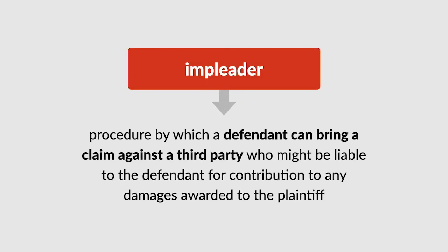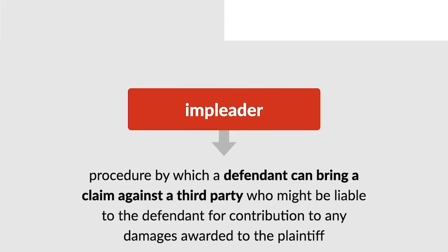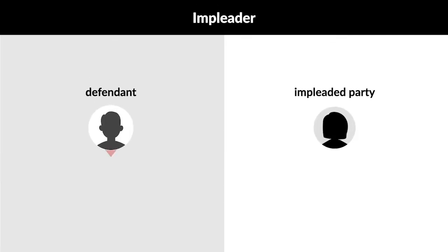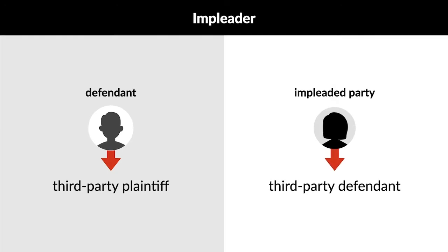Impleader is a procedure by which a defendant in a civil lawsuit can bring a claim against a third party who might be liable to the defendant for contribution to any damages awarded to the plaintiff. The defendant becomes a third-party plaintiff, and the impleaded party becomes a third-party defendant.